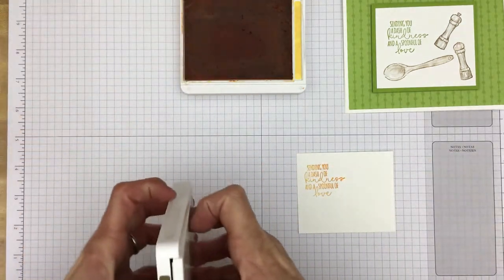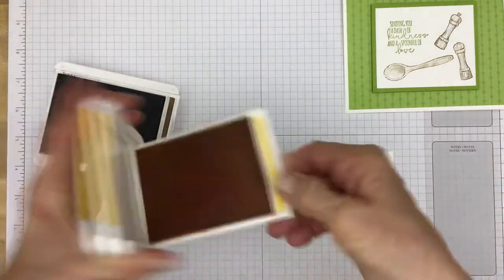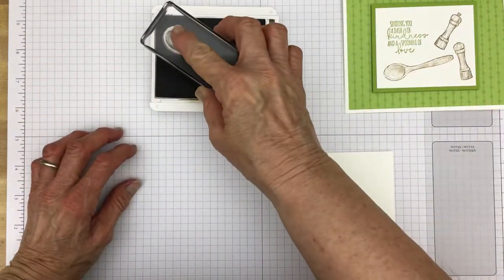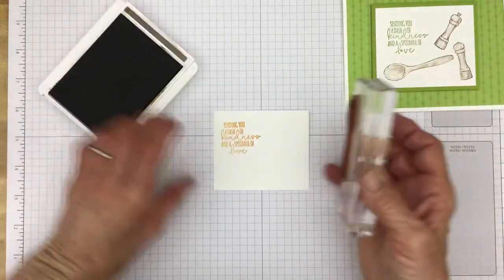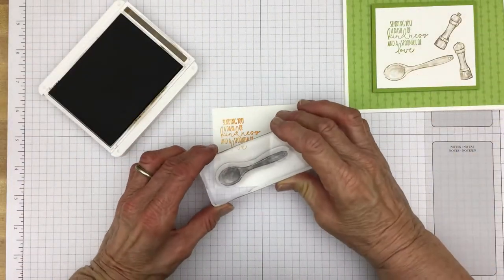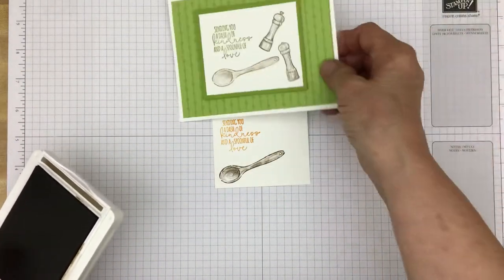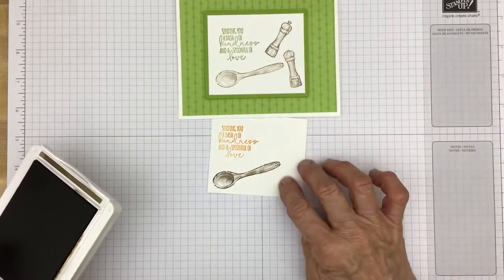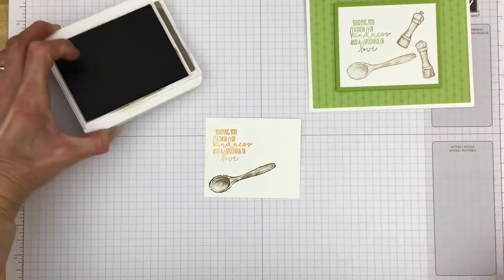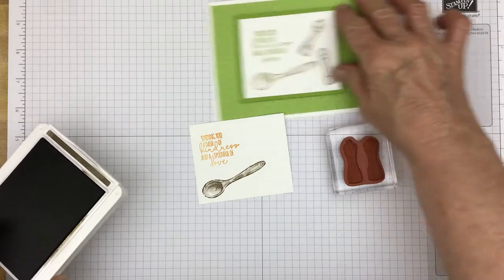And then we'll need the soft suede. Put this one away. And we'll do the spoon first. It's sort of the easiest. I'm just going to stamp it down here. I think for this one I might have stamped the soft white stamped it off. But I sort of like it darker with the Mango Melody.